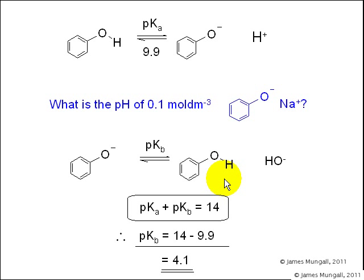Well, we've been given a pKa value for the conjugate acid. And so we can use the relation pKa plus pKb equals 14 and rearrange this to make pKb the subject, which gives pKb equals 14 minus pKa, which in this case is 14 minus 9.9, which equals 4.1.